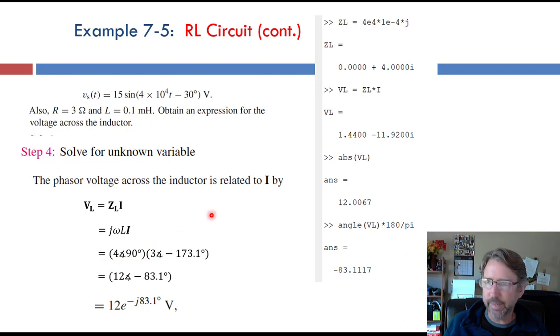So j omega L is up here. This is giving our ZL, j times omega times L. It gives us ZL of just 4i, which was the imaginary part of the total impedance before.